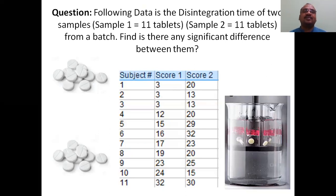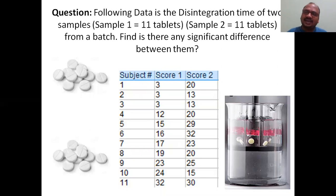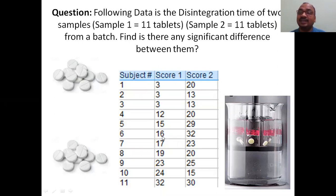The question: the following is the data of the disintegration time of two samples. Sample 1 equals 11 tablets, Sample 2 equals 11 tablets. Given is the disintegration time — not dissolution — from a batch. We need to find if there is any significant difference or not, calculated using the Type 4 t-test. Here are the 11 tablets in each group, with the disintegration time in minutes required for disintegration.